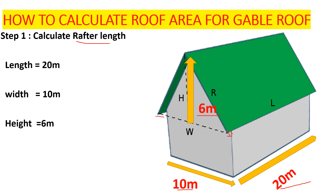We need to calculate the rafter length, which is a very important member. The roof area we need covers both sides of the roof. We need to get the rafter length — including the overhang — and the total length of the roof to get the area. Then we multiply by two because there are two sides. Now let's proceed and see how we get the rafter length.